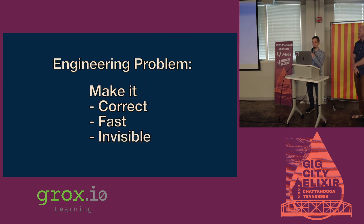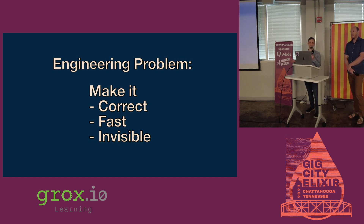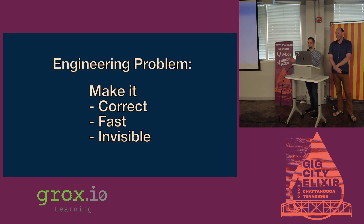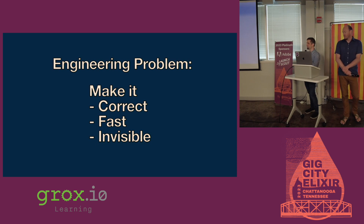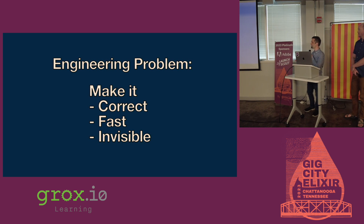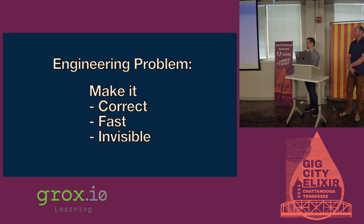Those of you who know me will know that I'm kind of a try-hard. So we set out and came up with these — and honestly, these are back-calculated engineering goals we're going to pretend like we had up front. We want to make it correct, because if it's broken and it messes up your code, that's more harm than good and people won't use it. We want to make it fast, because if it's slow, people will try to avoid running it. And finally, invisible — we want it to be part of their normal workflow, not another thing they have to remember to run.